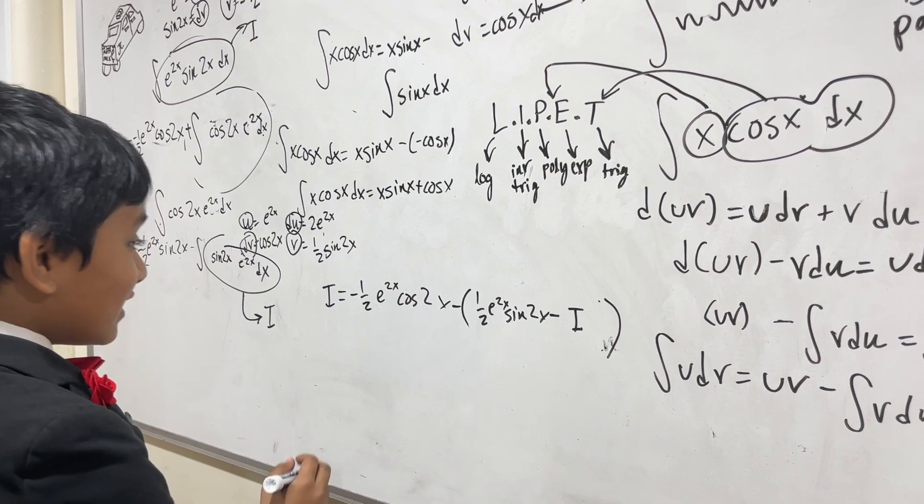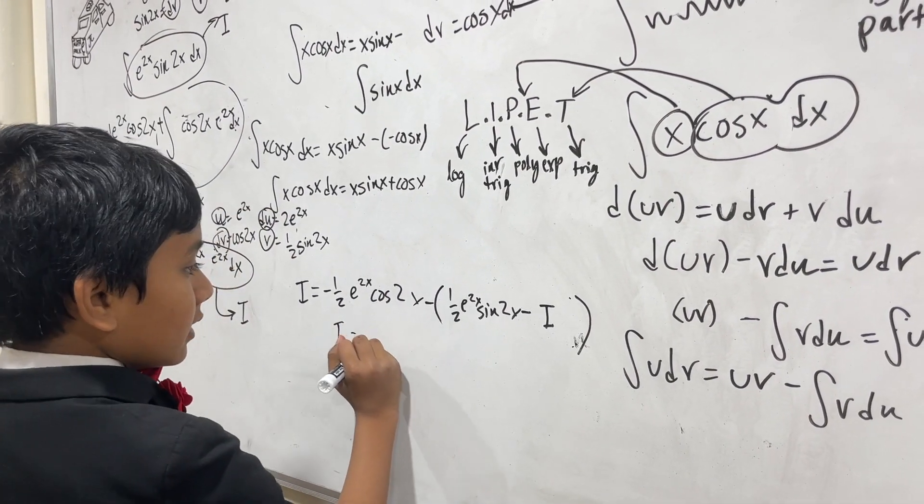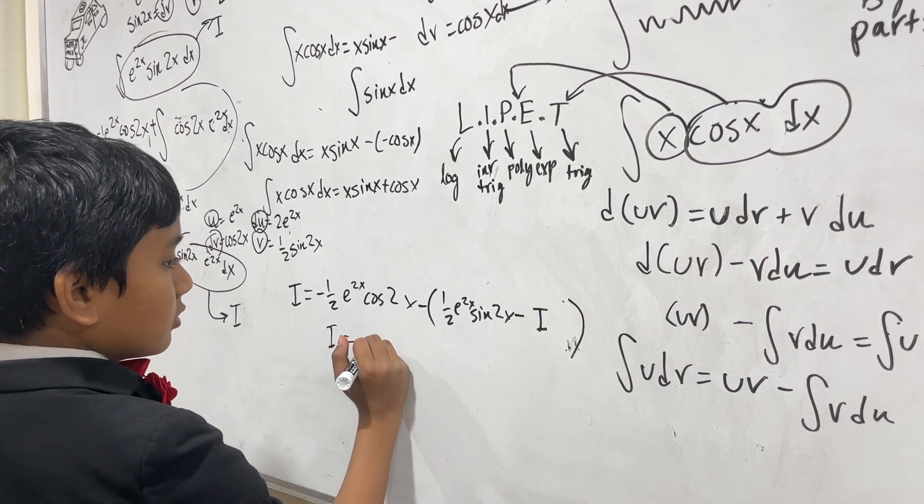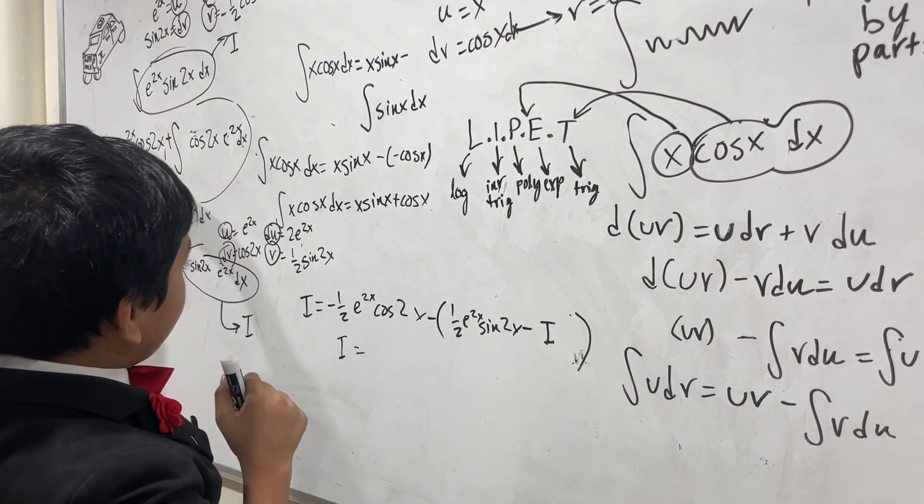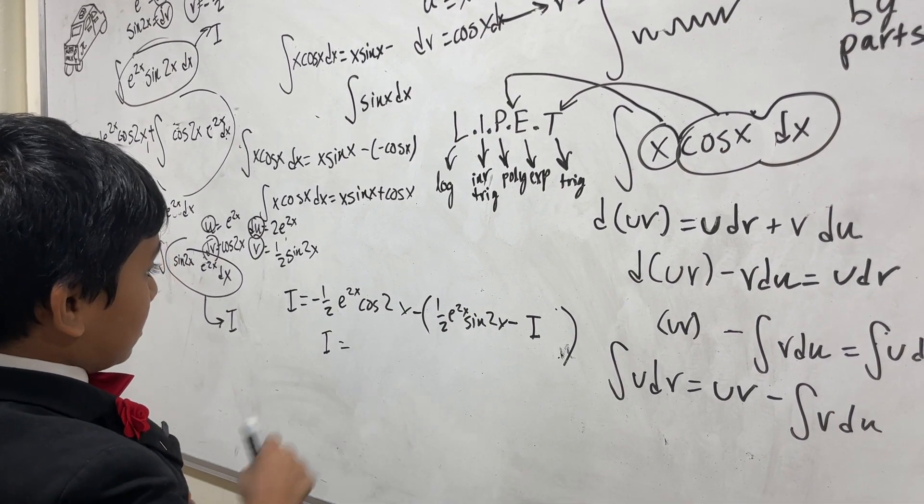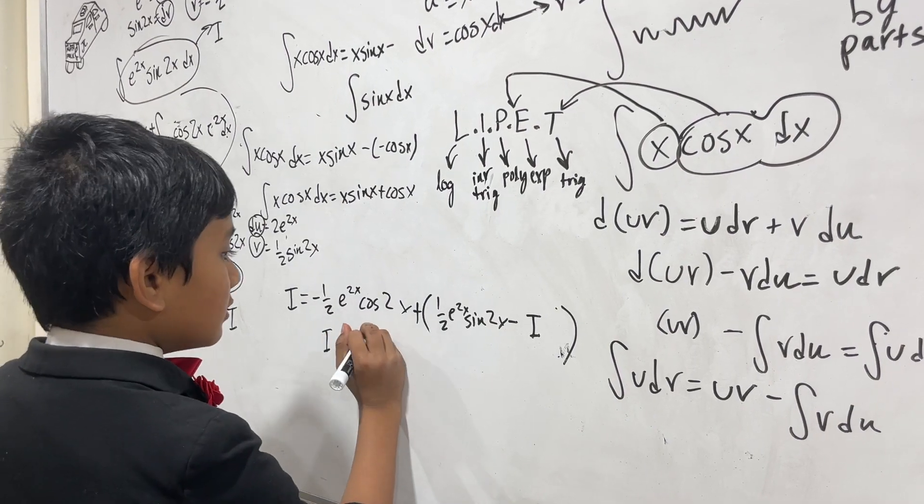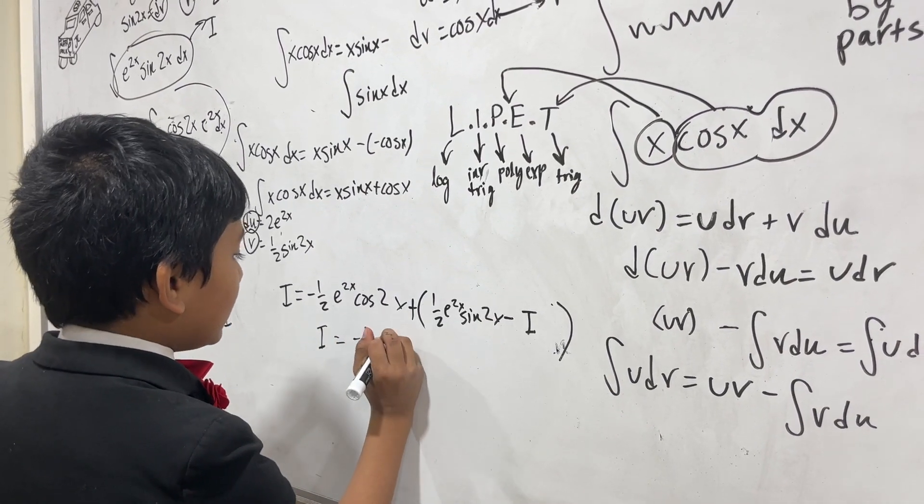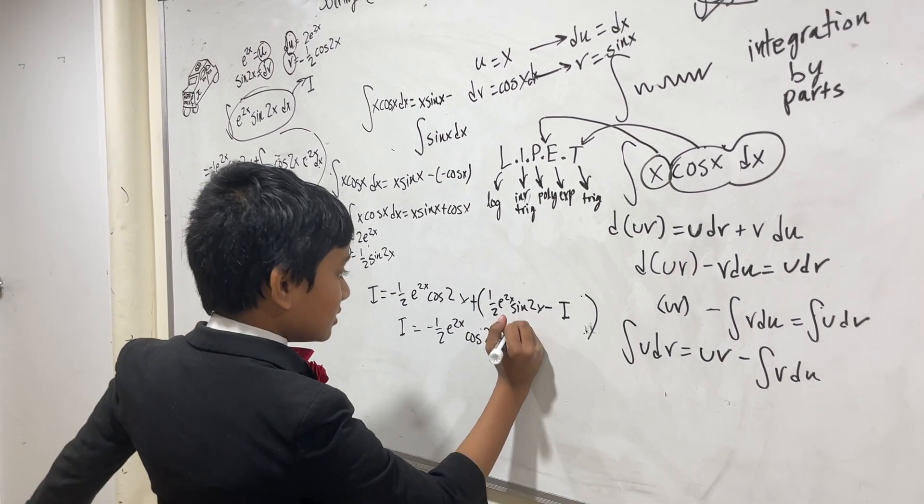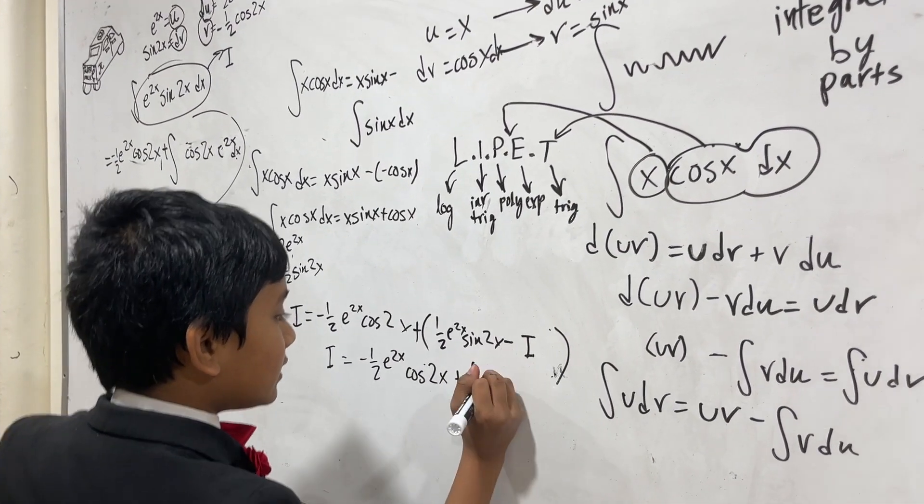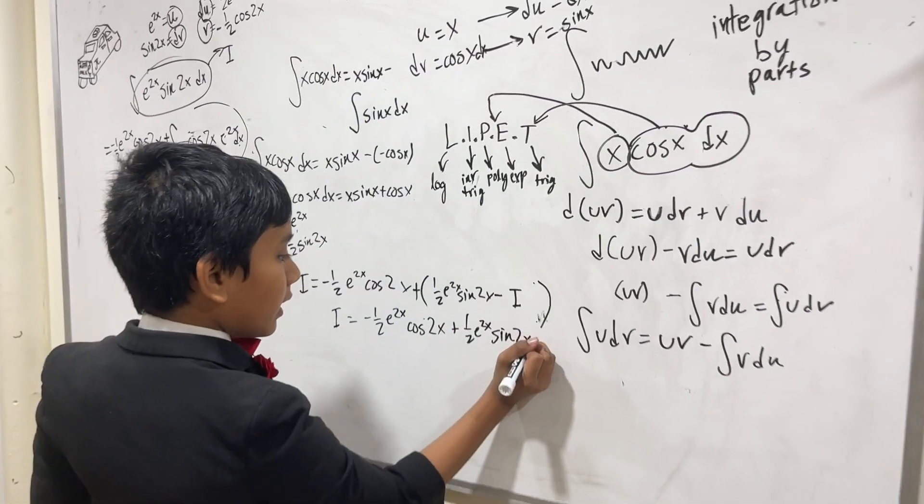You see this? So now it should be pretty much trivial to find i. We get minus 1 half e^(2x) cosine 2x plus 1 half e^(2x) sine 2x minus i.